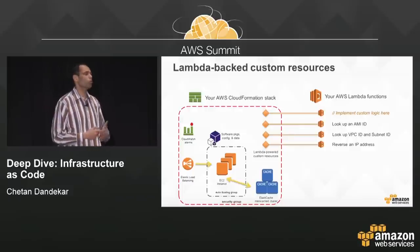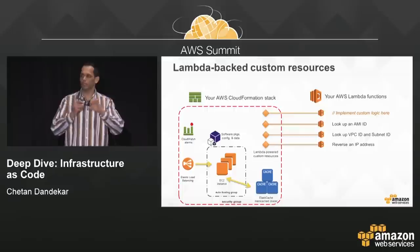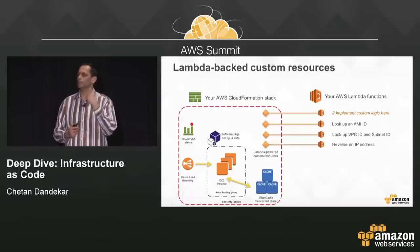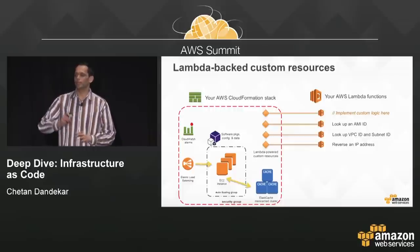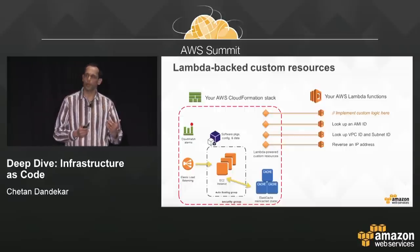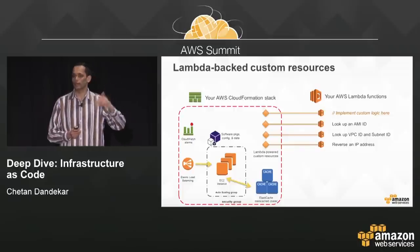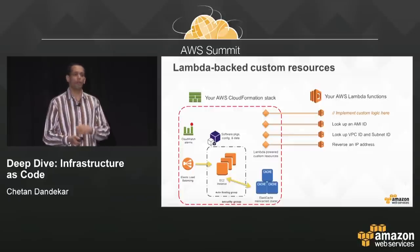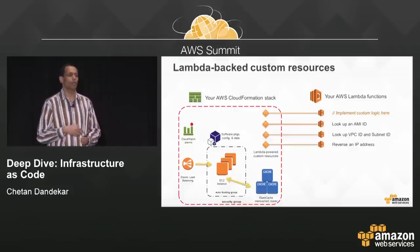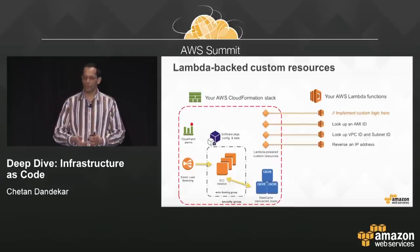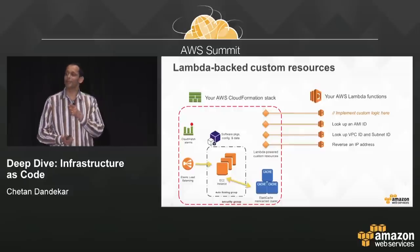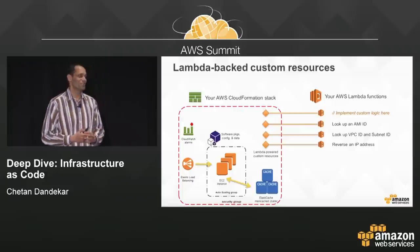Many customers do cross-stack references — they have separate networking, database, and application stacks and need to pass information between them. Previously, you had to manually look up subnet IDs or security group IDs and pass them into the application stack. Now you can write a Lambda function, embed it in the application stack, and it will look up the right subnet ID and security group automatically. Any custom logic you want to implement is possible — you could even write a Lambda function to order a coffee when a stack is successfully created. If someone does write that, please let us know and we'll happily write a blog post about it.